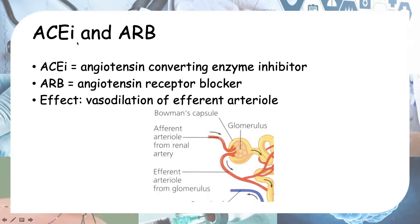Next, we'll talk about ACE inhibitors and ARBs — angiotensin converting enzyme inhibitors and angiotensin receptor blockers. These two have a similar effect because they both block the action of angiotensin: one at the converting step, one at the receptor. The net effect of blocking angiotensin is dilation of the efferent arteriole.